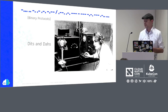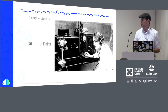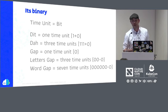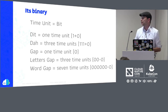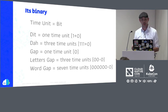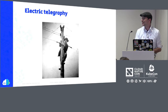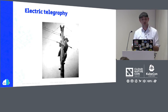Morse code is described as a series of dits and dahs, or some people call them dots and dashes. But it's a little bit more than that. Morse code is actually binary. It's broken down by a time unit, which is a bit. And each dit, dah, gap — everything else is actually equatable to a binary value. Dits being a 1 plus a 0 — it actually has to be defined by the gap following it. So that means telegraphy was the first binary protocol on the wire — the first time we were transferring data on the wire with binary data.